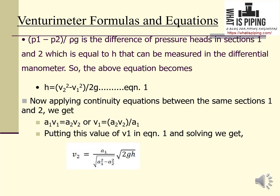(P1 − P2)/ρg is the difference of pressure heads between sections 1 and 2, which equals h as measured by the differential manometer. So the equation becomes h = (V2² − V1²)/2g — call this equation 1. Applying the continuity equation: A1·V1 = A2·V2, so V1 = A2·V2/A1. Substituting into equation 1 and solving gives: V2 = A1/√(A1² − A2²) × √(2gh).